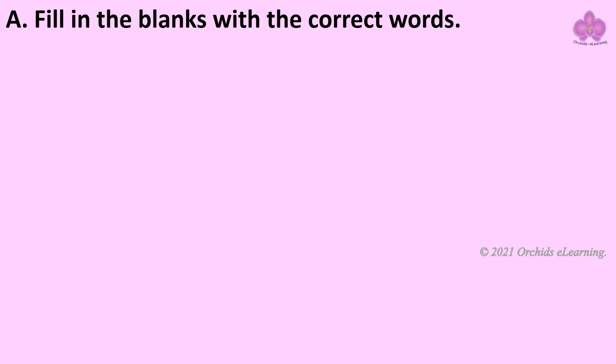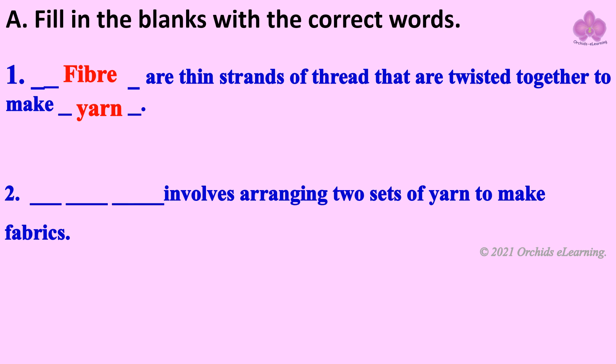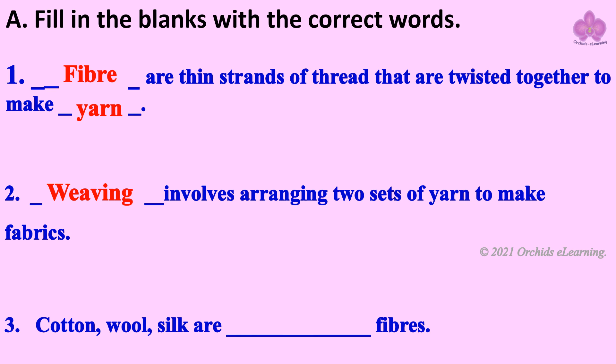Fill in the blanks with the correct words. A thin strand of thread that is twisted together to make fiber and yarn. Weaving involves arranging two sets of yarn to make fabrics.